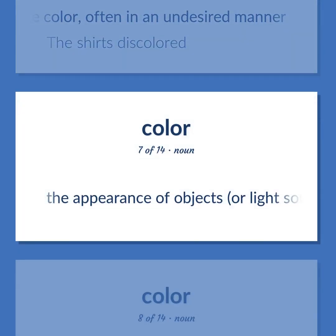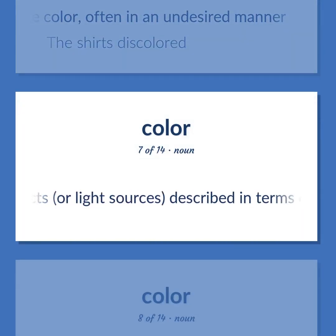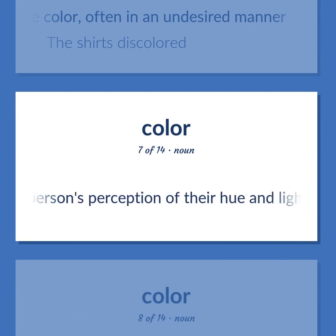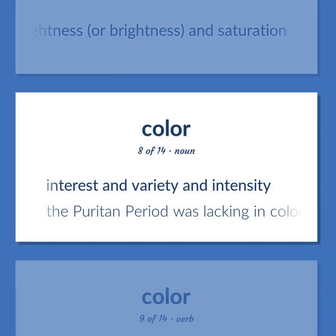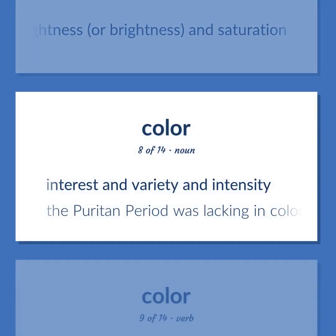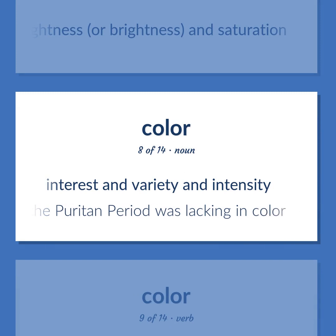The appearance of objects or light sources, described in terms of a person's perception of their hue and lightness, or brightness, and saturation. Interest in variety and intensity. The Puritan period was lacking in color.